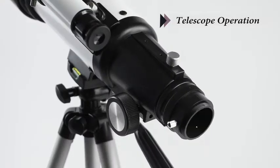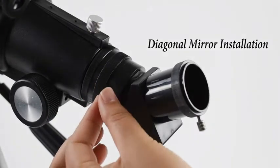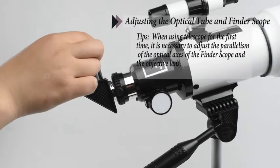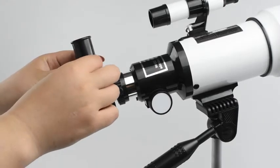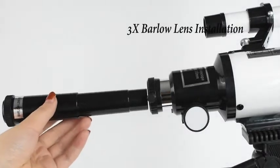Insert the diagonal mirror into the end of the telescope tube. Install the 20mm eyepiece into the diagonal mirror and tighten the set screw. When high magnification observation is required, a 3x multiplier can be inserted between the eyepiece and the diagonal mirror.